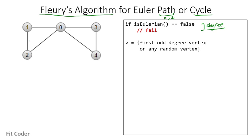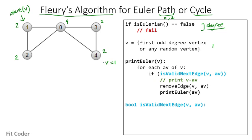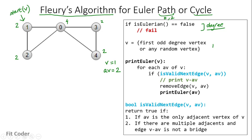We start the traversal from the first odd degree vertex, or any random vertex if none exist. In this graph, vertex 2 has degree 2, vertex 1 has degree 2, vertex 0 has degree 4, and vertices 3 and 4 both have degree 2 — no odd degree vertex, so we start from vertex 1. We pass 1 to the printEuler function, so v is 1. For each adjacent vertex of 1, which are 2 and 0, we call the isValidNextEdge function. This function checks two conditions: whether the vertex is the only adjacent vertex, or if there are multiple adjacents, whether the edge is a bridge edge.